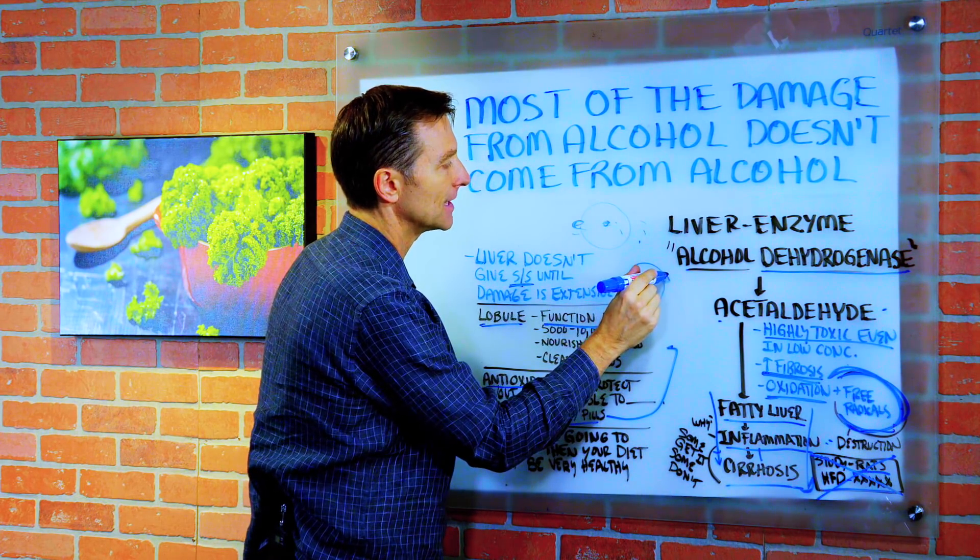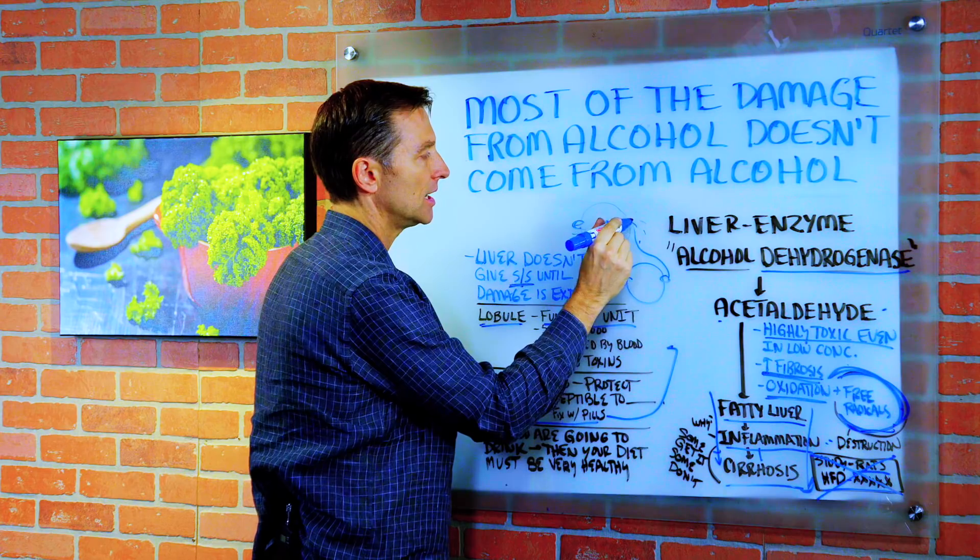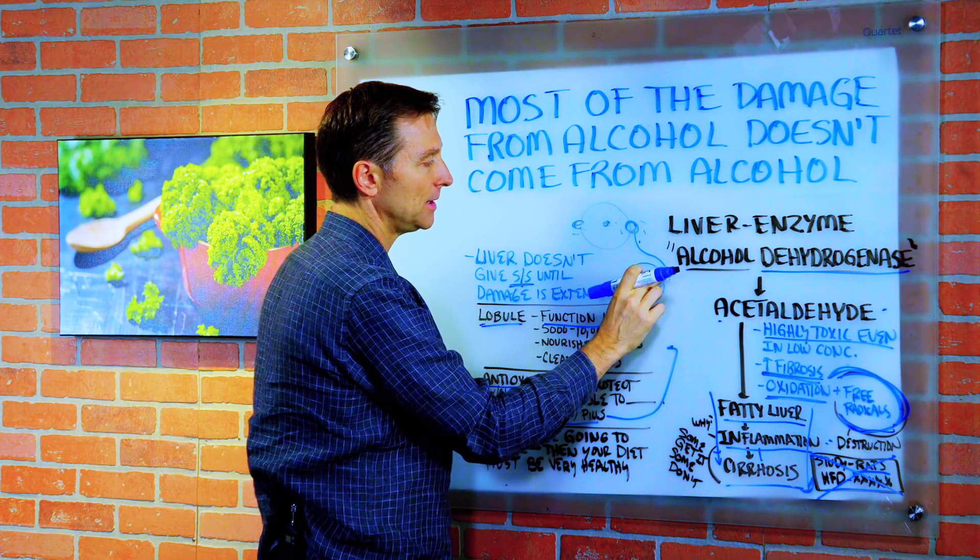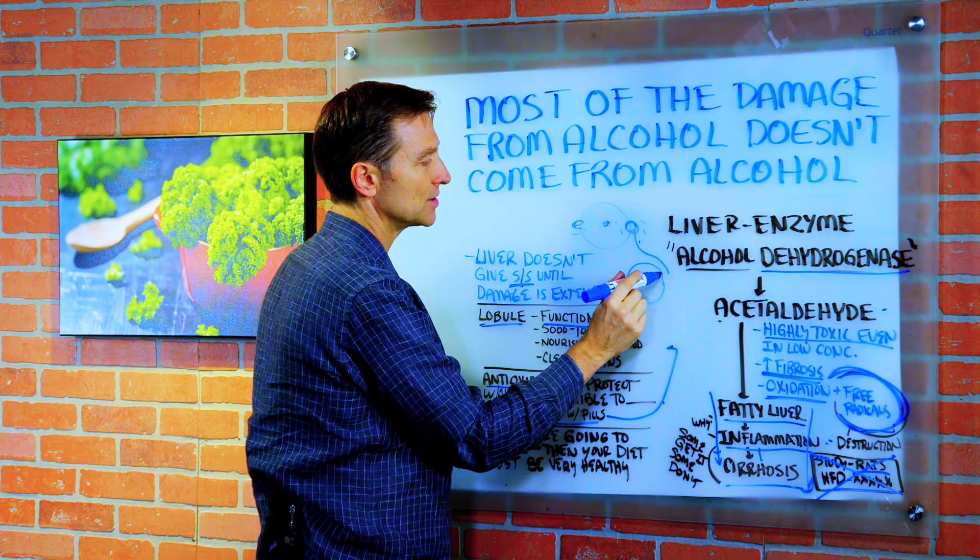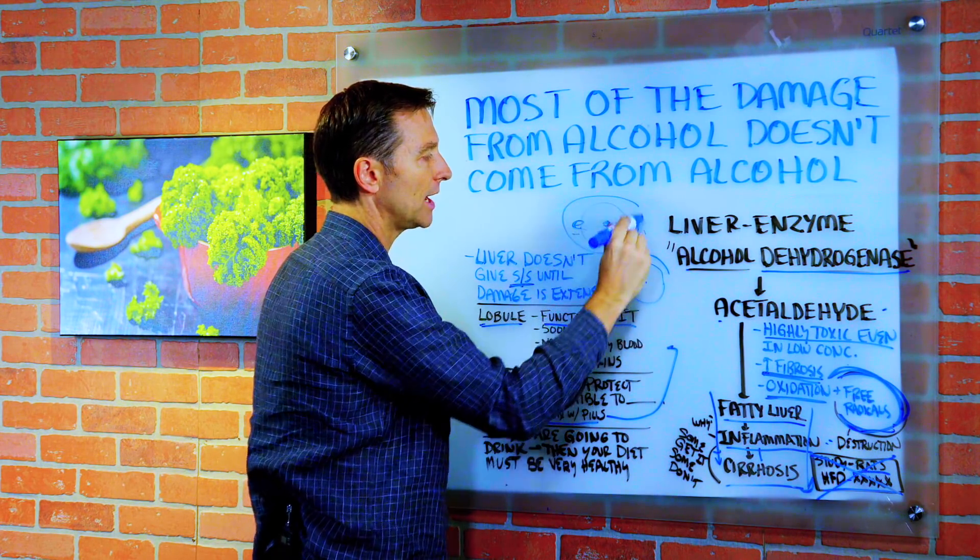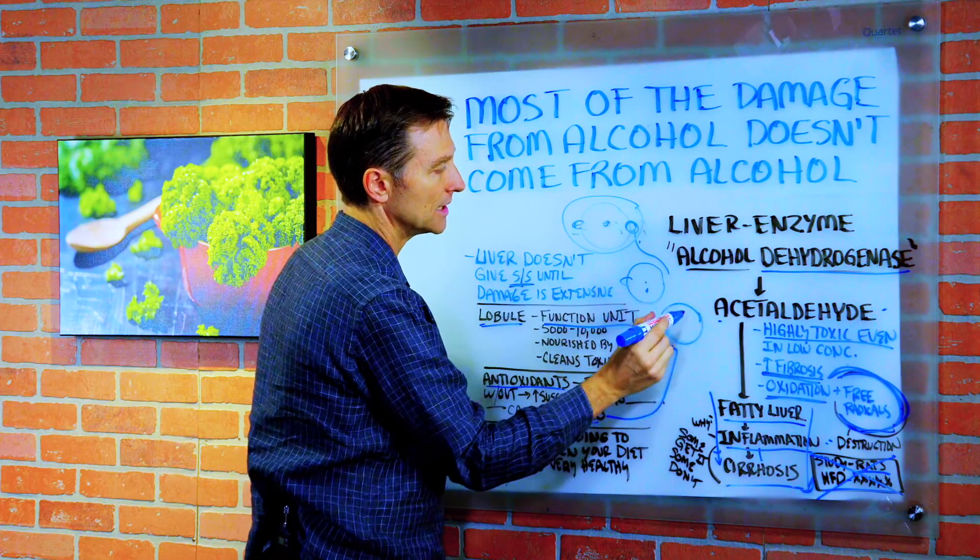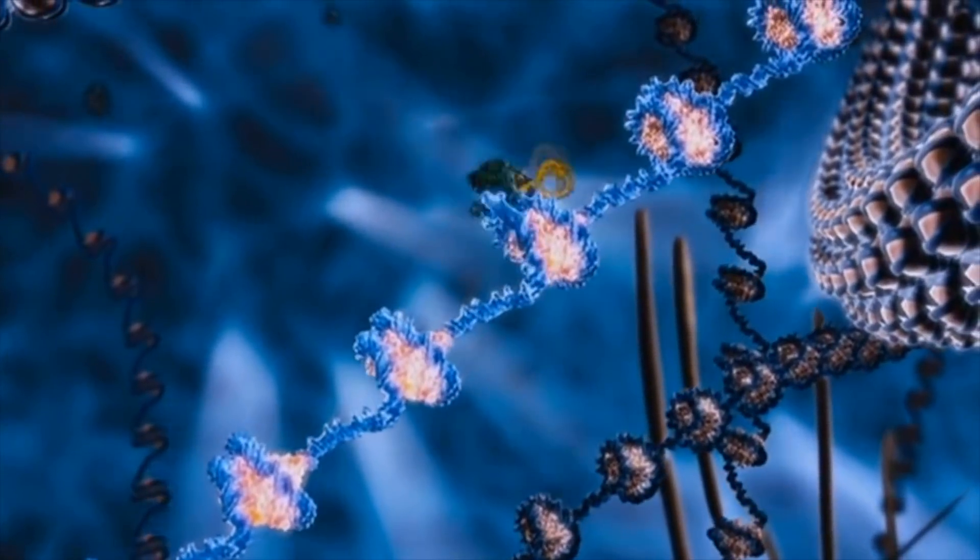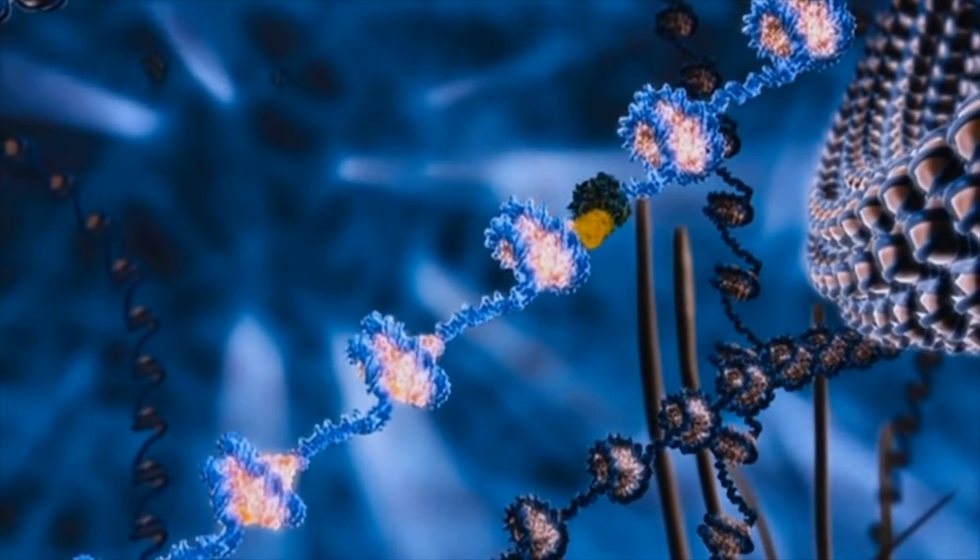So an antioxidant gives up one of its electrons to stabilize this free radical, but then it becomes to that degree a free radical. So this could stabilize. But now this one needs another electron from another antioxidant. So this is why many different antioxidants are necessary to pull off this job.